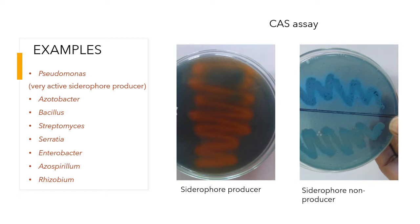Two plates are shown here. The first is a siderophore producer. The color of CAS medium is bluish; when you streak your isolate, you may see a color change from blue to orange. In the case of non-producers, there is no color change — you will only see bacterial growth.